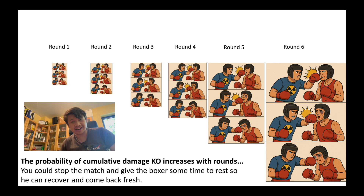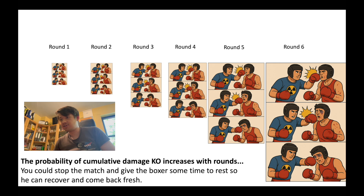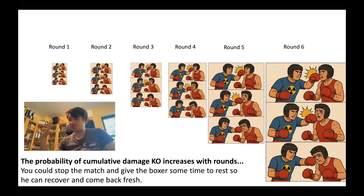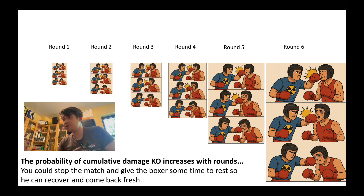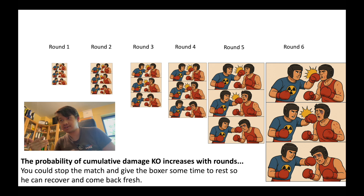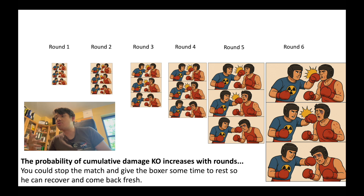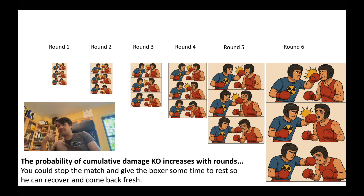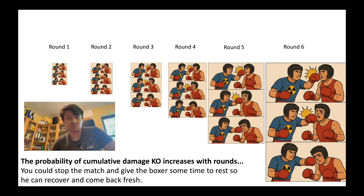Of course, the boxer is completely exhausted at round 6 and even more at higher rounds. So the probability of cumulative damage knockout increases with rounds. As the rounds go on, the boxer takes more hits, he is more exhausted, and so the probability of knockout increases round by round.